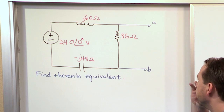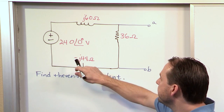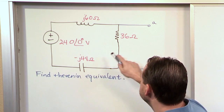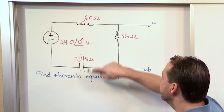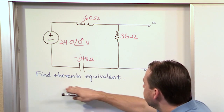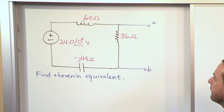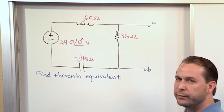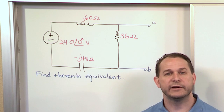To illustrate it, we have this circuit here. We have an AC source at 240 volts at a phase of zero degrees. We have three elements: a resistor, an inductor, and a capacitor, and we have the impedances already given for everything, so you don't have to calculate that. What we're asked to do is find the Thevenin equivalent between terminals A and B — replacing this whole circuit with a single voltage source, the Thevenin equivalent voltage, and a single impedance, the Thevenin equivalent impedance.